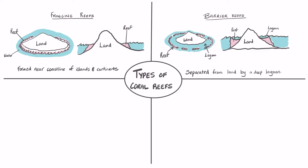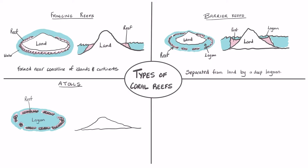A third type of coral reef are atolls. Atolls are usually elliptical in shape and they are usually found on top of volcanic islands. Atolls have a centrally located lagoon and they can vary in size from one kilometer in diameter to over 130 kilometers long.